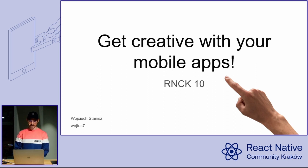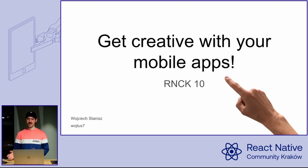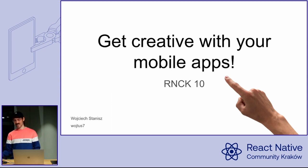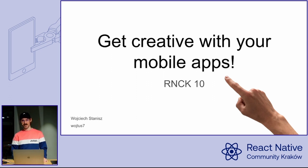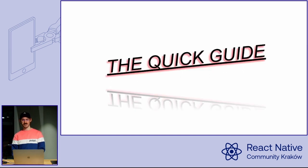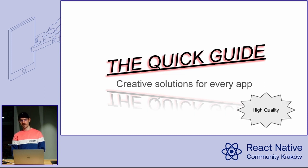I always wanted to create a talk like this where I don't talk about any technical stuff at all, just about the quicker features you can create in your mobile apps. It doesn't even depend on the software or hardware, whether you're using Android or iOS. And we can just be crazy about what we do. So I created this little quick guide for creative solutions for every app — and it obviously has high quality. Everything with a star has quite high quality, like the QC on every Chinese stuff.